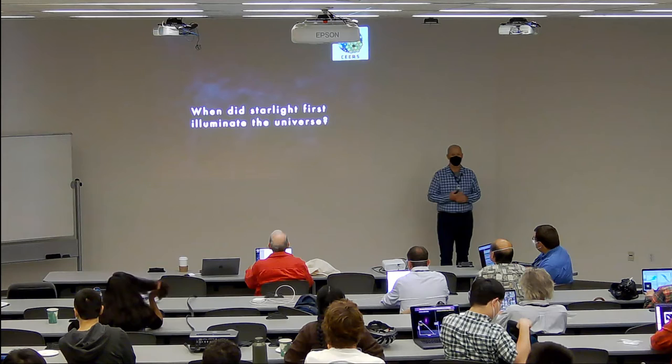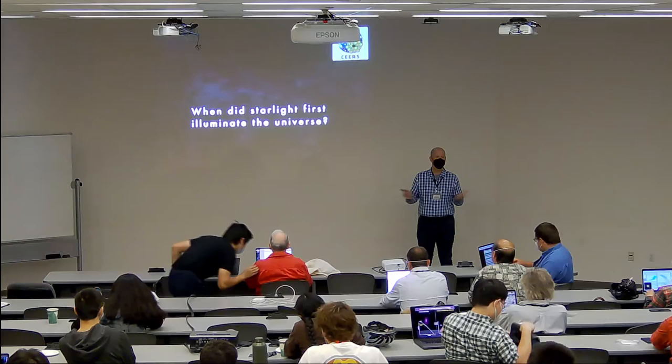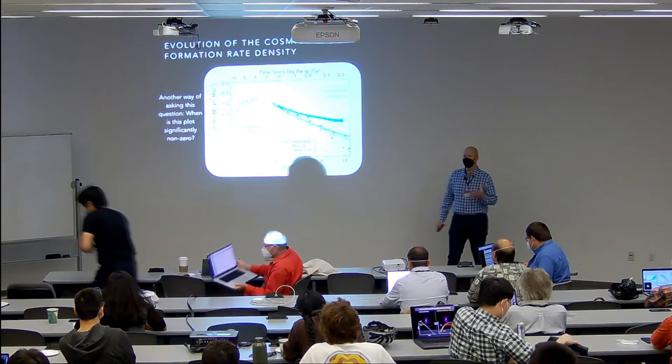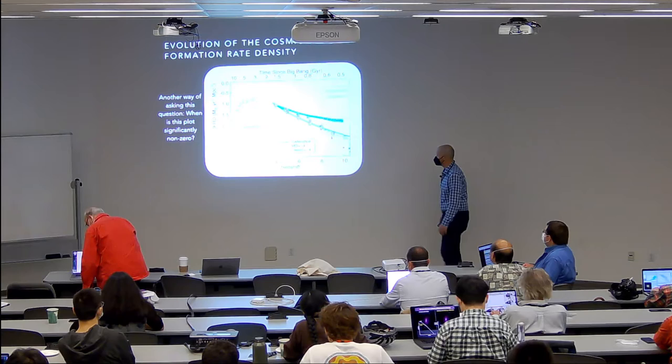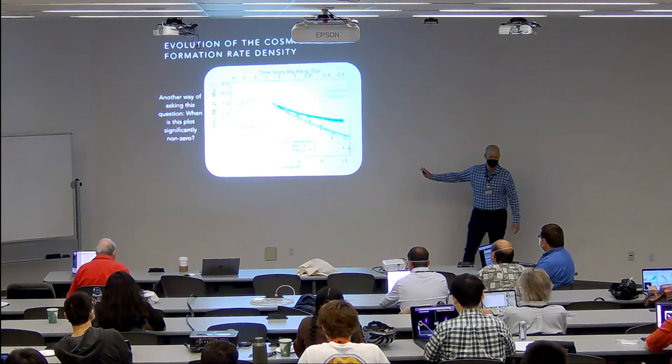There are many simulations that have made predictions for when stars first started to form — whether we're talking about Pop III stars, small star clusters, or even galaxies — but we don't actually know until we go and observe it. From an observer's standpoint, we can motivate this by looking at the evolution of the cosmic star formation rate density: the total amount of star formation per volume as a function of redshift.